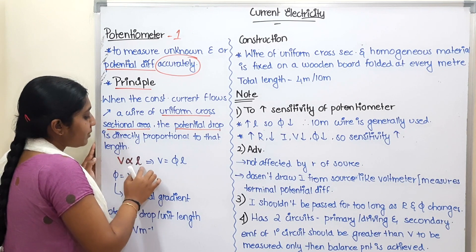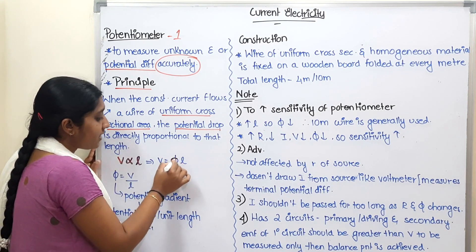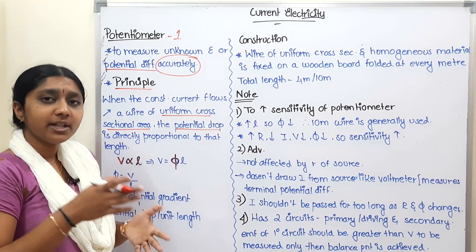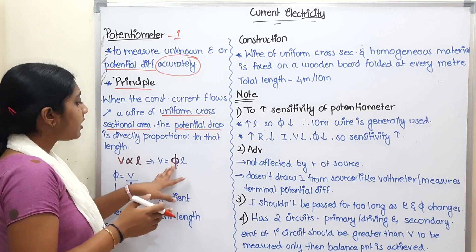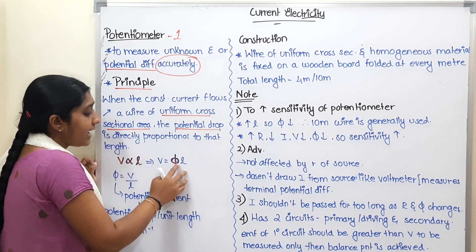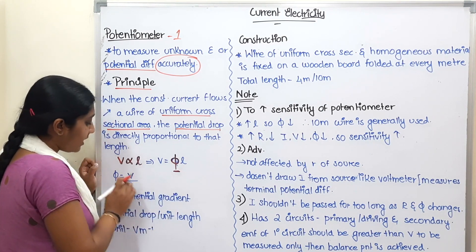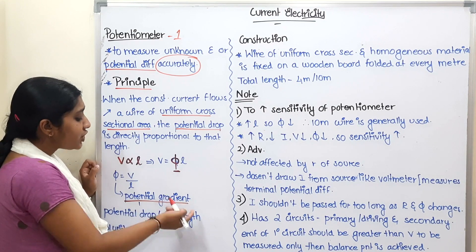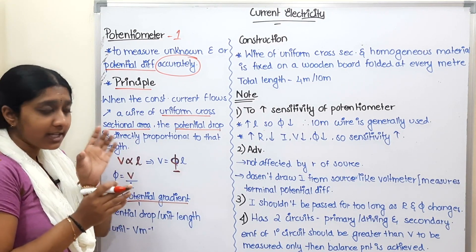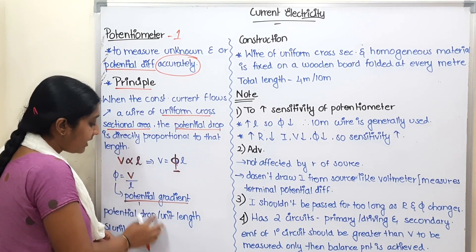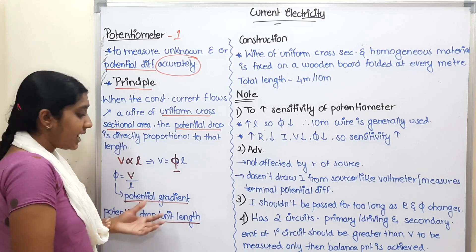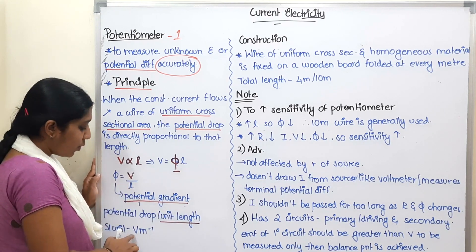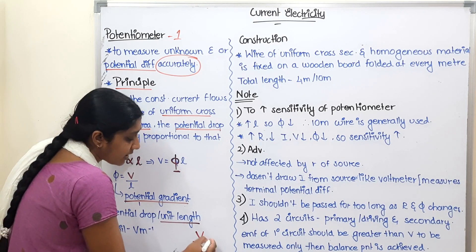So V is directly proportional to L. We introduce a constant k, so V = k × L. This constant k is called the Potential Gradient (φ), defined as the potential drop per unit length: φ = V/L. The unit of potential gradient is volt per metre (V/m).